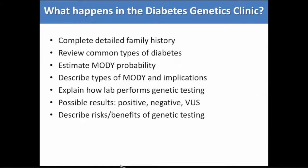During the visit — actually a one-hour consult — we go through a detailed family history, explain common types of diabetes and what MODY is, what it means to get genetic testing, and what possible results are. When you get genetic testing, it's not always a yes or no — sometimes there's a variant of uncertain significance, or VUS, so patients need to know that their test won't always be absolutely informative. We also discuss the risks and benefits of genetic testing.